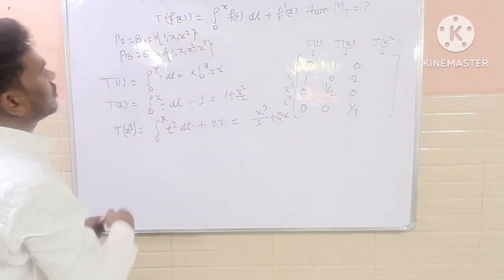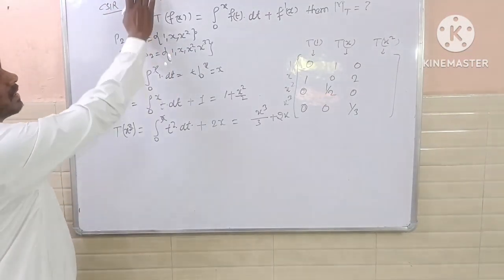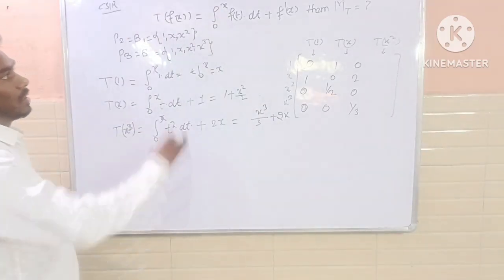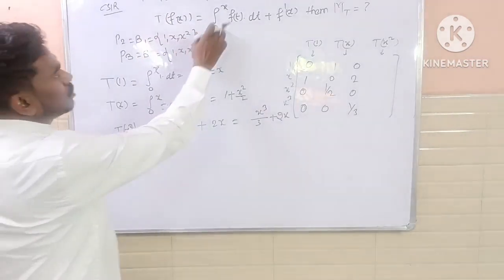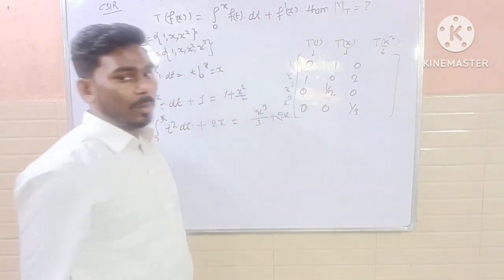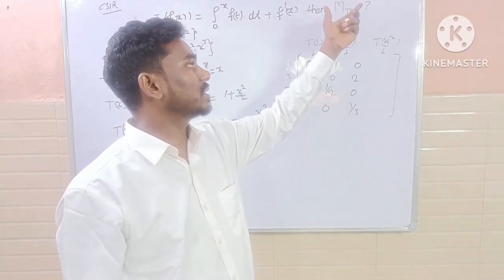This was a question about CSIR UGC Net, and what does the question ask? The question is: T is a linear transformation T going from P2 to P3, and defined as T(f(x)) equals 0 to x f(t) dt plus f dash x. So I have to ask what is the transformation matrix?